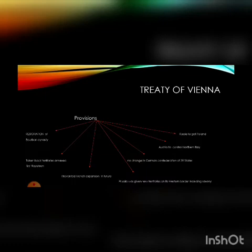Here we will see the major provisions of the Treaty of Vienna. First is restoration of the Bourbon dynasty in France, which was overthrown during the French Revolution in 1789, with which the era of monarchical government ended in France.